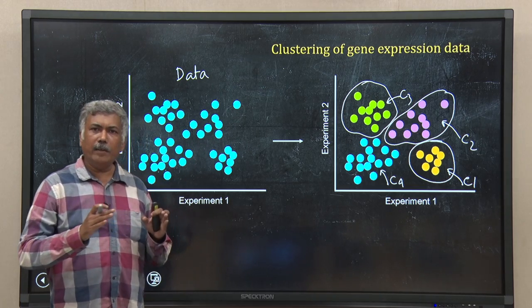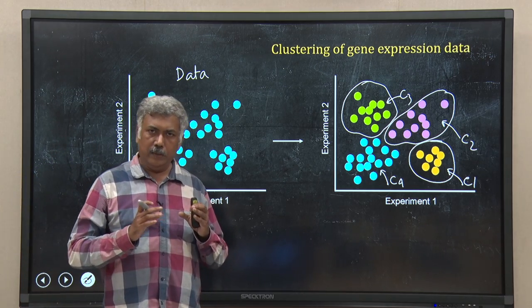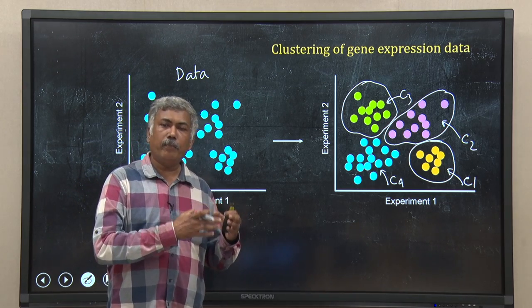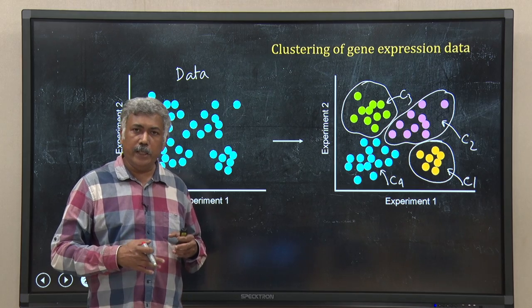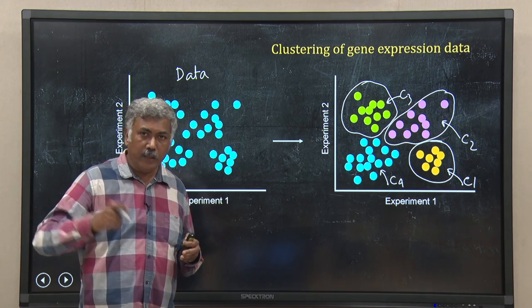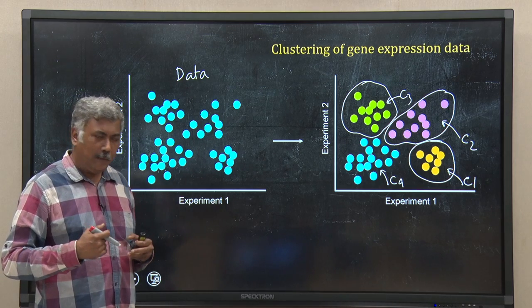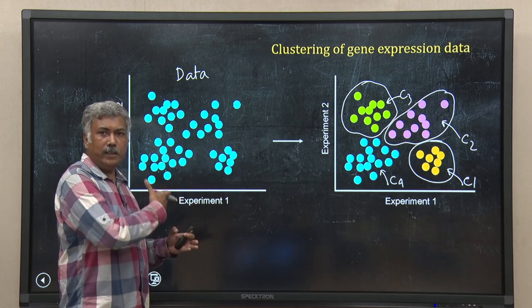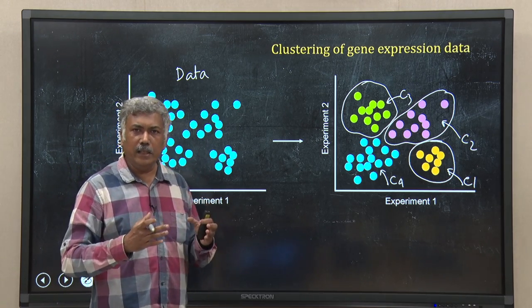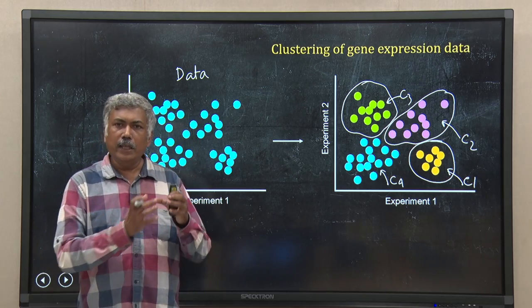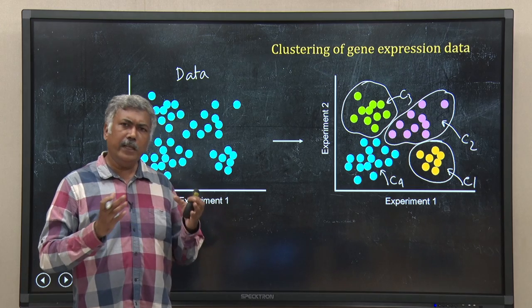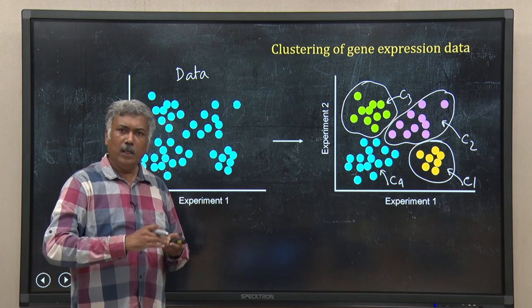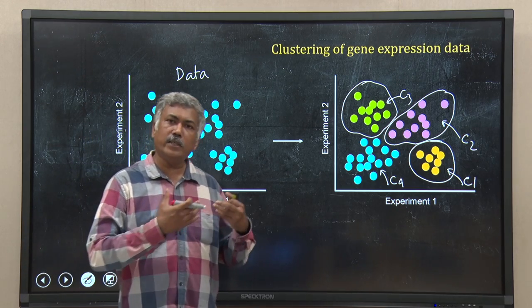In this particular case I am showing two-dimensional data with two experimental conditions. But in your experiment it may be 10-dimensional — 10 different conditions, or samples from 20 different people or patients, or different grades of a disease. So you may have n-dimensional data, and we can do this type of clustering on n-dimensional data. We can also reduce dimensions from n down to 2 or 3, which helps in visualization as well as in clustering.